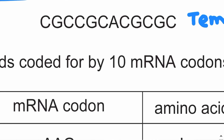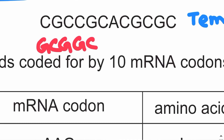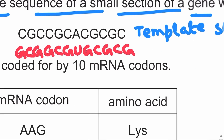The complementary sequence will be the messenger RNA. CGC becomes GCG, CGC again becomes GCG, ACG becomes UGC, and CGC again becomes GCG. This is the sequence of the section of messenger RNA.